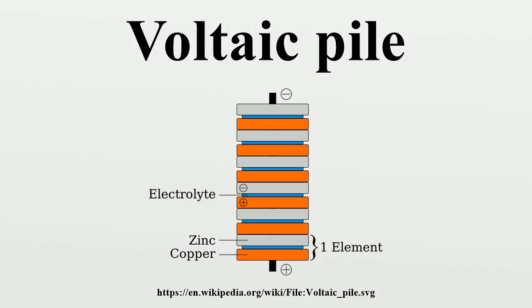When the top and bottom contacts were connected by a wire, an electric current flowed through the Voltaic Pile and the connecting wire.